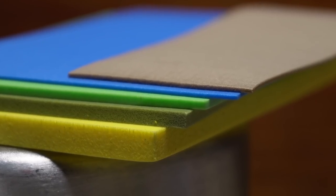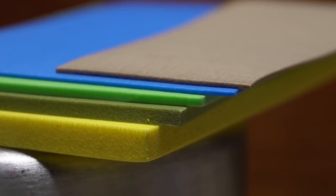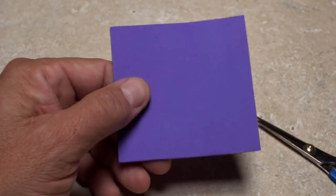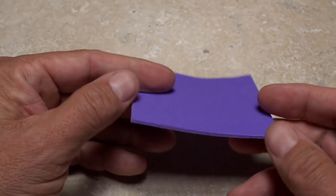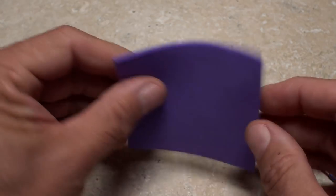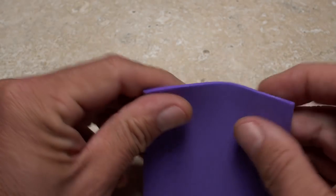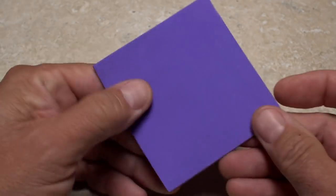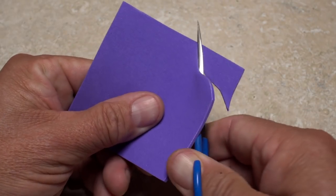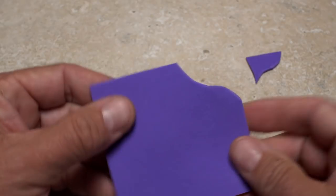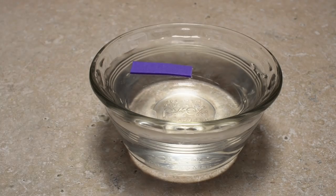Each of these thicknesses has slightly different characteristics and uses, but once again, let's go back to basics and talk primarily about two millimeter sheet foam. Sheets can be folded, have a little bit of stretch or give, and can be easily cut with regular scissors or a hobby knife. Perhaps the most important attribute, however, is the fact that foam floats.